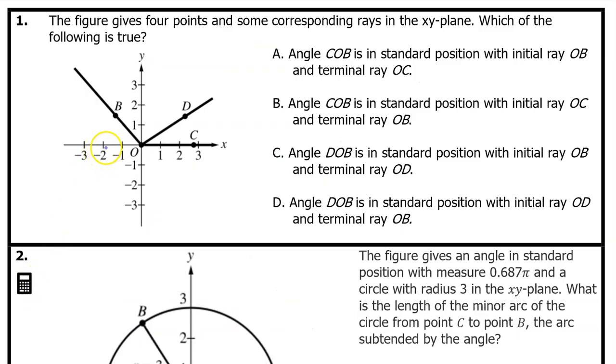Number 1. The figure gives 4 points and some corresponding rays in the xy plane, which of the following is true. Option A refers to angle COB, so I have highlighted that angle. It goes from C to O to B. That's how you know you're looking at angle COB. Option A says that angle COB is in standard position with an initial ray OB and terminal ray OC.